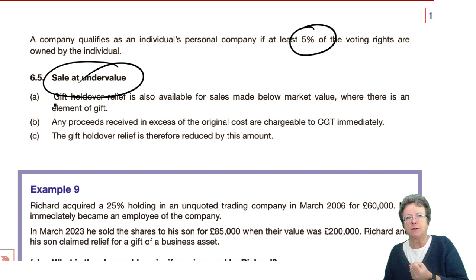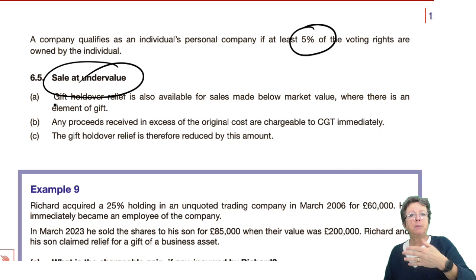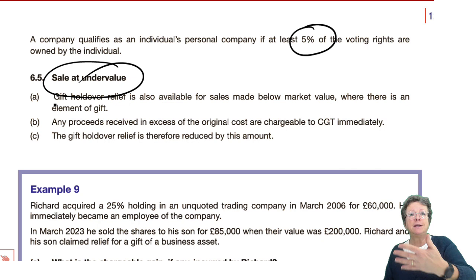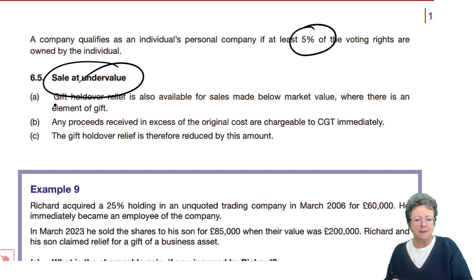Remember the principle: no cash — complete rollover, complete gift — no cash, no tax. Part cash — you will pay tax on it. Same with rollover: if you didn't reinvest all the money and kept the cash, you paid tax on it. Same with this: if you gift something but receive some cash — but not full market value — you will pay tax on it.